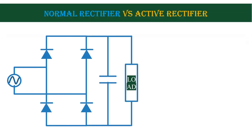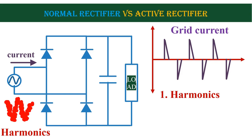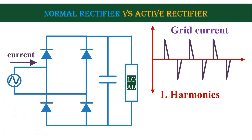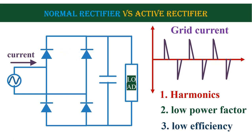This is a normal diode rectifier. This circuit is very common and we use it in most electronic circuits. The major problem associated with this circuit is that it draws non-sinusoidal current from the grid. That creates lots of harmonics in the grid voltage, which can affect the other loads connected to the same grid. Also, the circuit operates at very low power factor. Since the voltage drop across the diode is more compared to MOSFET or IGBT, the efficiency of this rectifier is very less.